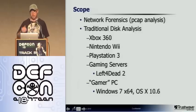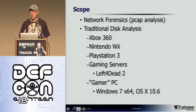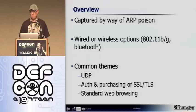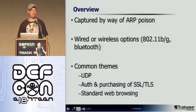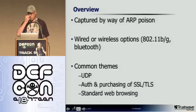Scope, just briefly: we're doing network forensics and traditional disk analysis on these systems. How I did this was on my home network — I set up ARP poisoning, fired up the Wii and PS3, had a friend bring over his 360, and just captured traffic to see what we could find. All console systems have multiple ways to connect. The Wii is only wireless. The PS3 and 360 have wired, wireless, and Bluetooth.